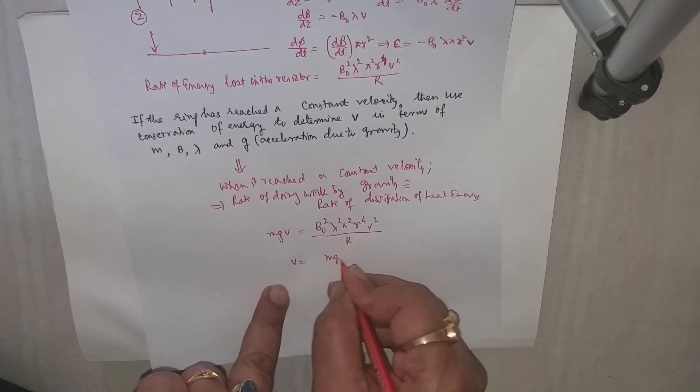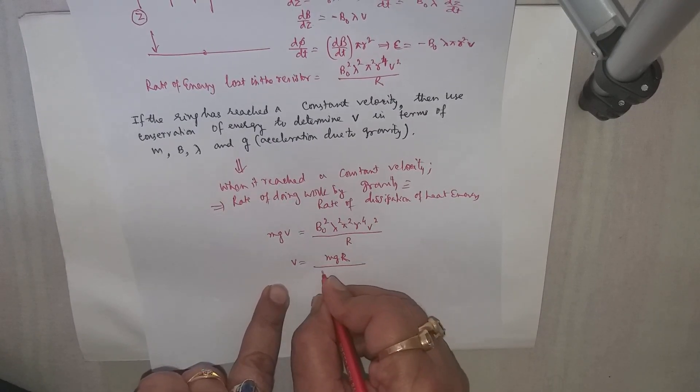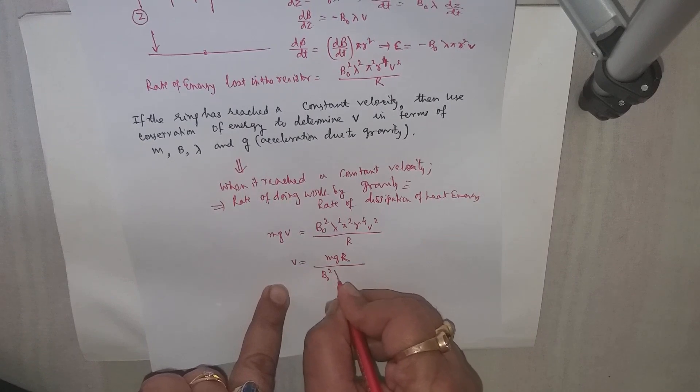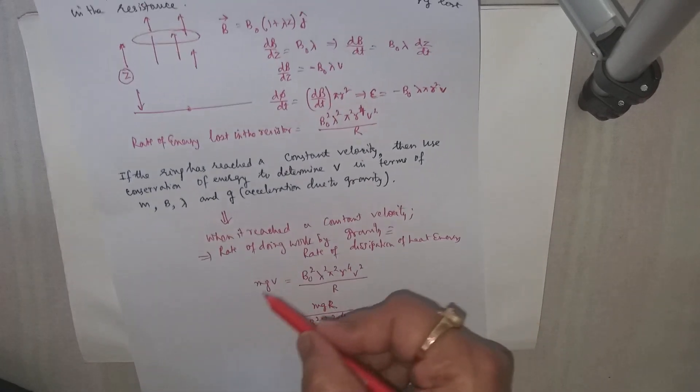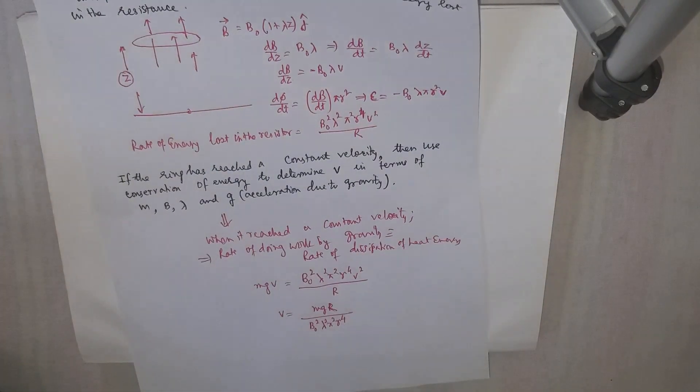We have mgr divided by B₀²λ²π²r⁴. So this will be the speed when it has stabilized its value.